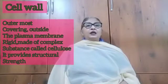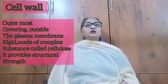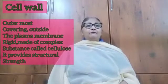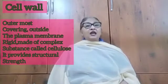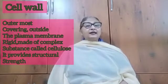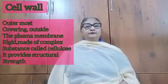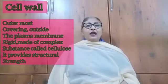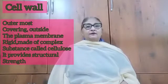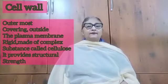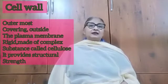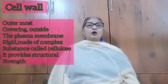Hello students. Let us start off with cell wall. It is the outermost covering of a plant cell. It is found outside the plasma membrane. It is rigid and made of a complex substance called cellulose, and it provides structural strength or support to the plant.